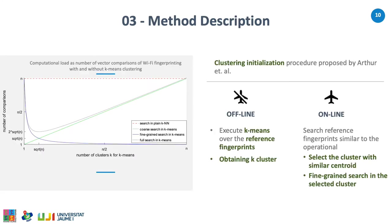Now let's see the method description. First of all, we use the enhanced cluster initialization procedure proposed by Arthur rather than the completely random one. Note that the improved initialization is also stochastic and the resulting clusters depend on the initialization. The information from the clusters is integrated into the Wi-Fi fingerprints using two phases: the online phase and the offline phase. In the offline phase, k-means is executed over the reference fingerprints obtaining K clusters, providing a local version of the radio map for every cluster. The online phase finds the reference fingerprints most similar to the operational fingerprints in two steps: the first step selects the cluster whose centroid is most similar to the operational fingerprints, and the second step performs a fine-grain search on the selected cluster.